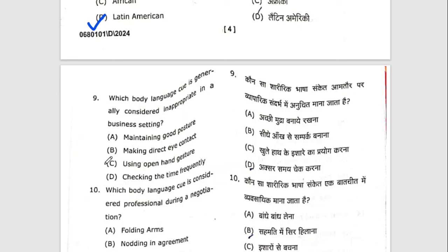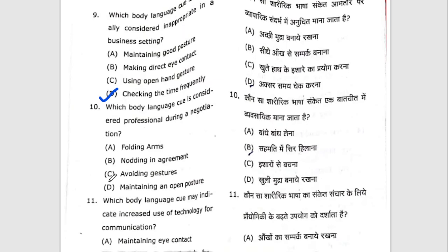Ninth question: which body language is generally considered inappropriate in a business setting? The right option is D — checking the time frequently. Tenth question: which body language is considered professional during a negotiation? The right option is D — maintaining open posture.